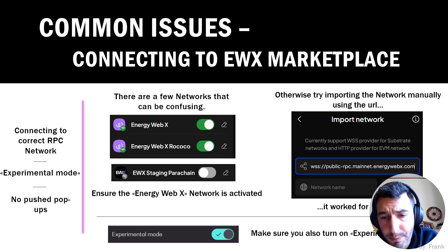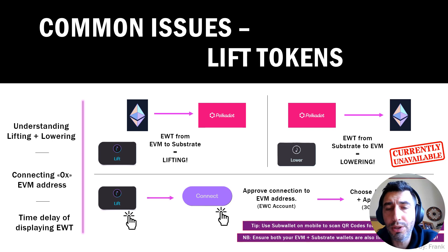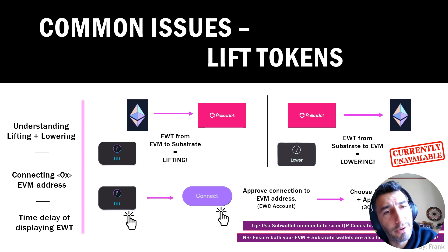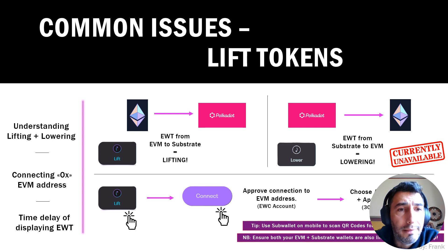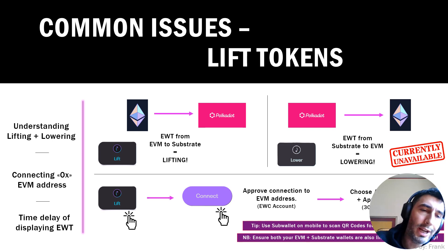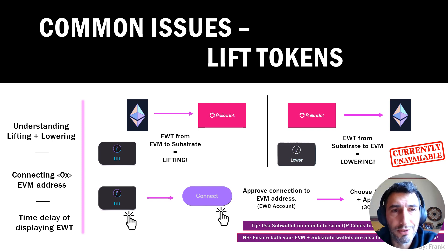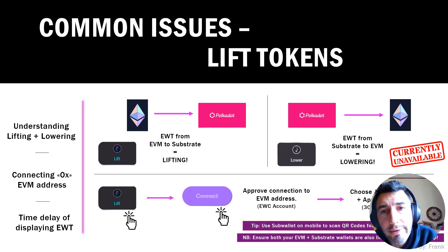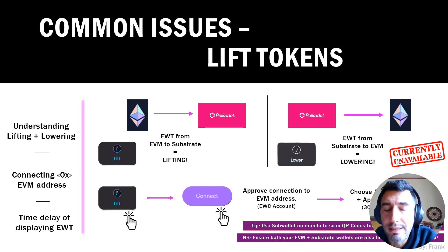Once you are connected, make sure you are in experimental mode because that will help with lifting the tokens. Under your wallet tab, you can see the lifting and lowering options. Lowering is currently unavailable. Lifting tokens means taking them from the EVM to substrate — from your Energy Web chain on the Ethereum infrastructure into the new Energy Web X on the Polkadot substrate, where worker nodes are deployed. Lowering is the opposite, but it's not currently available as it's part of what I believe is still in the audit phase.